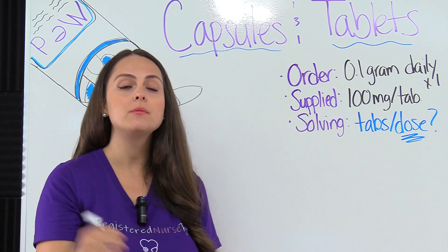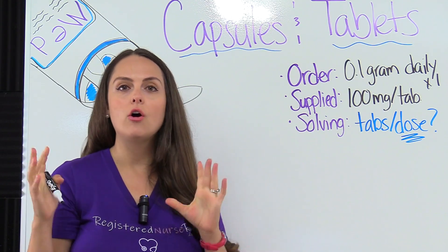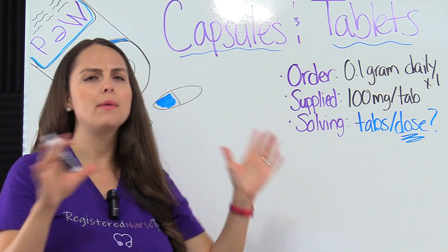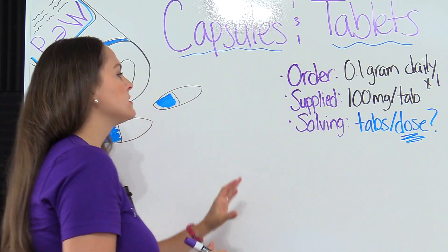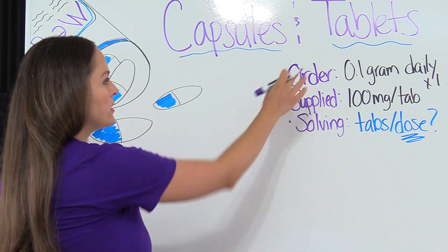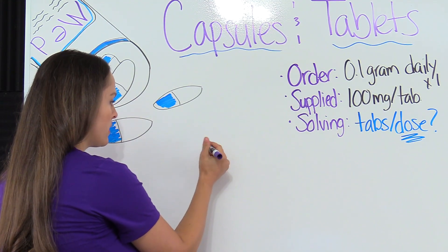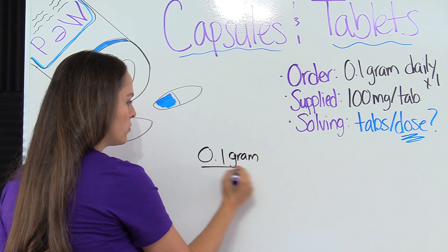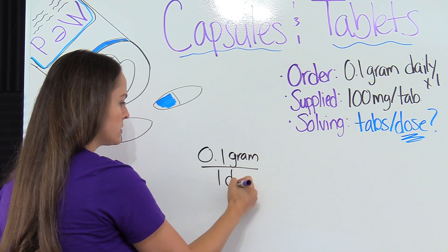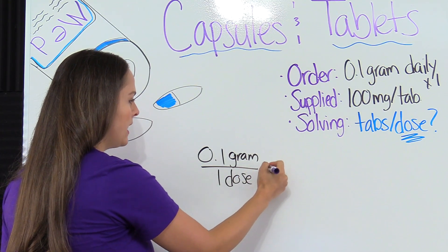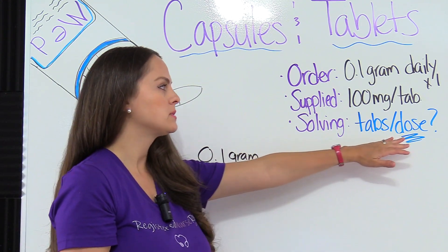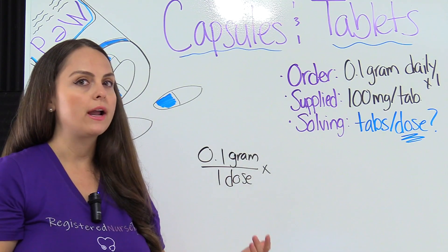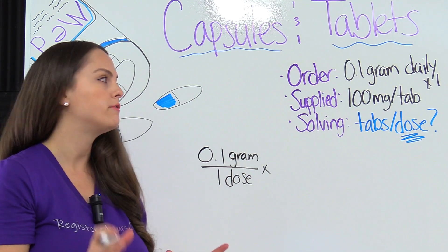To solve these problems, I'm going to use dimensional analysis. I have a whole series you can access where I show you how to work dimensional analysis and we work a bunch of different dosage calculation problems. So let's set up our problem. We're going to start with what was ordered: 0.1 gram was ordered, once daily — that's our dose. We need to get to tablets per dose, and we're supplied with tablets that are in milligrams, so we're going to have to start converting.